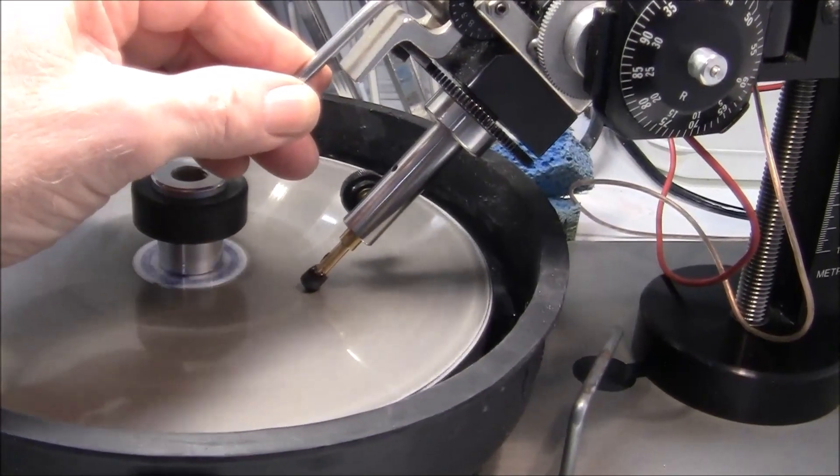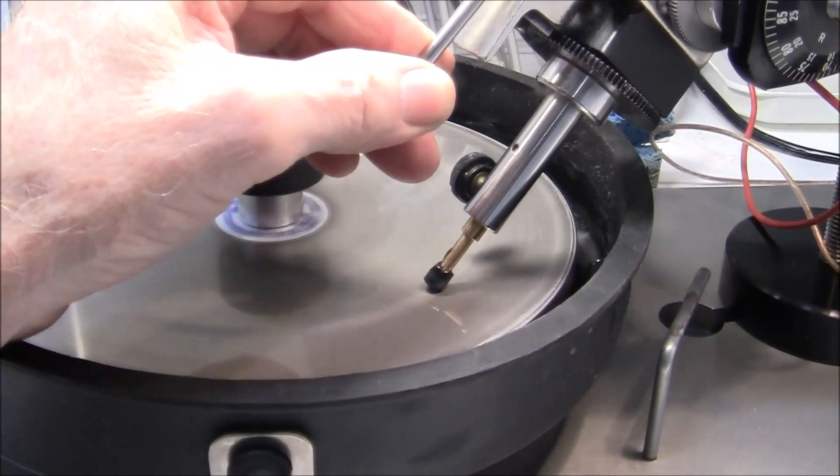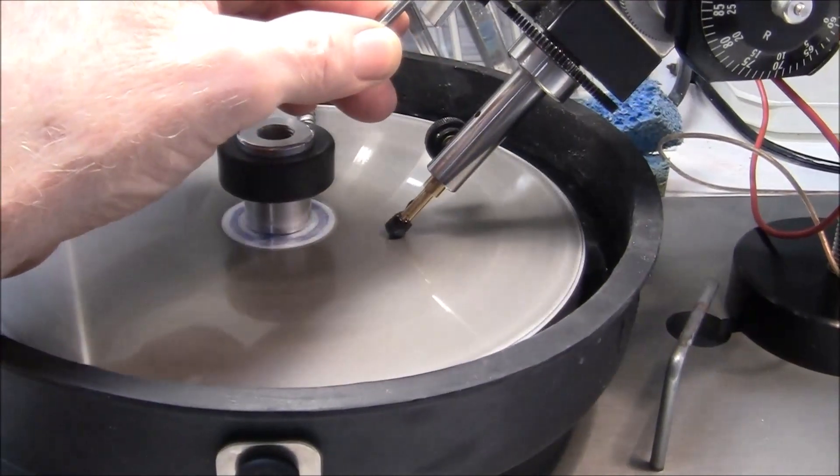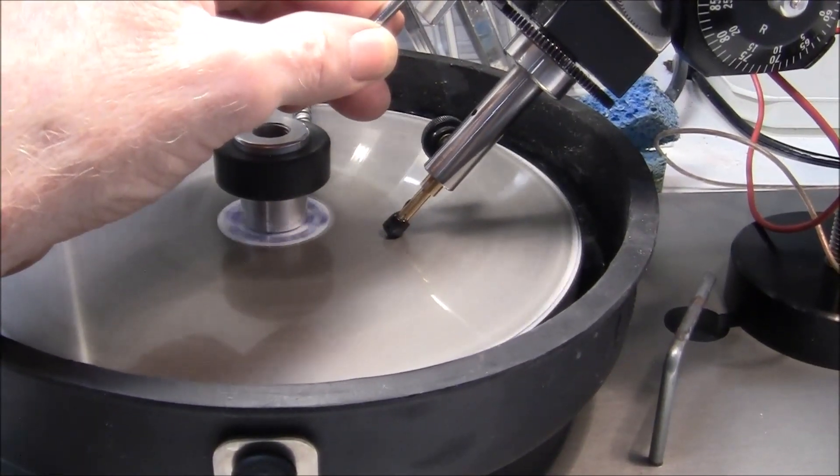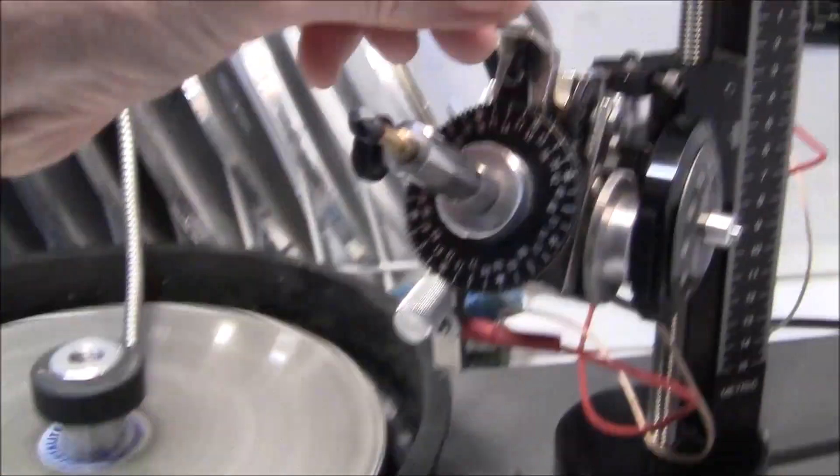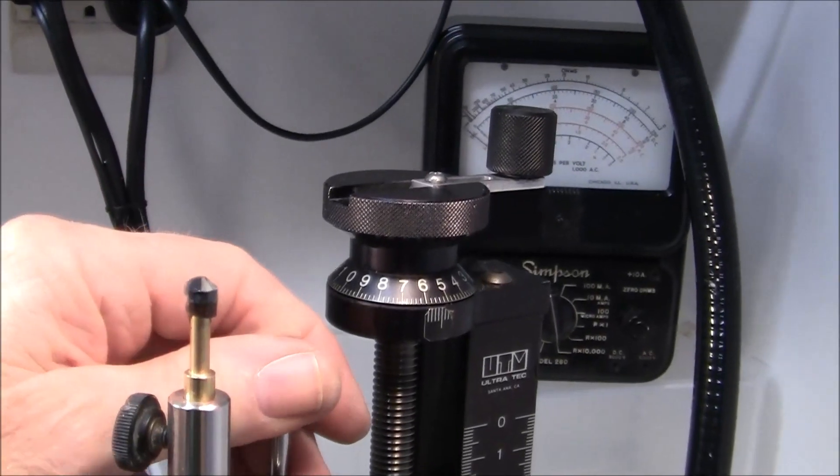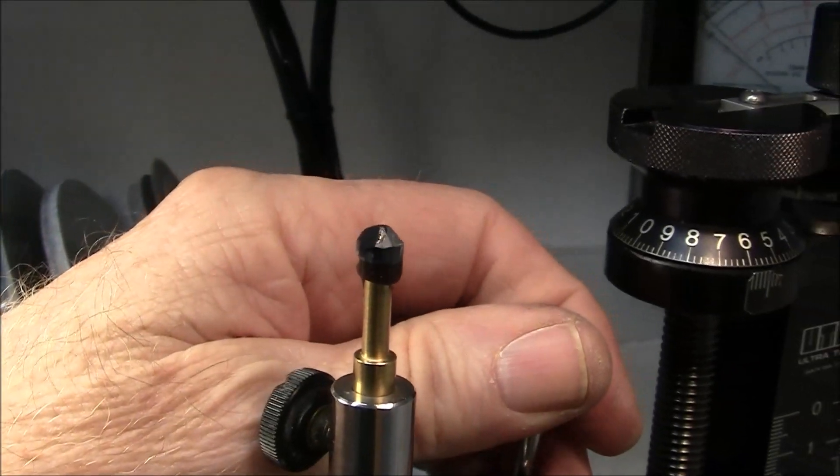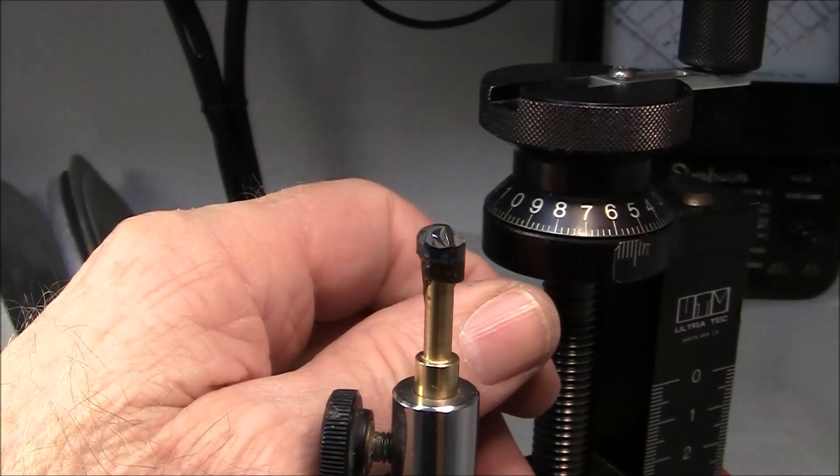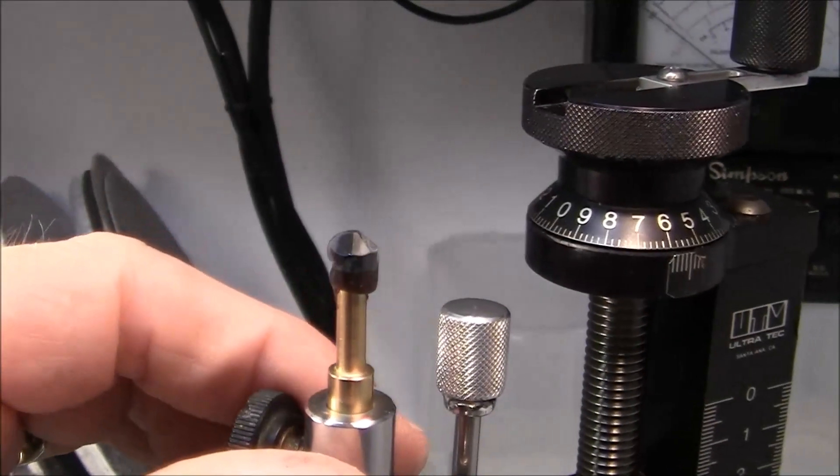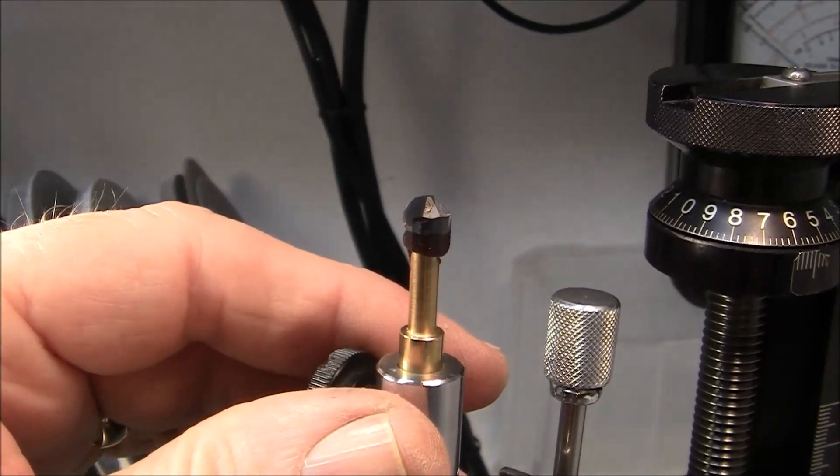Using a 600 lap cutting the pavilion mains at 42 degrees. That's what we look like so far. I've already cut the girdle at 90 and I faceted the girdle.